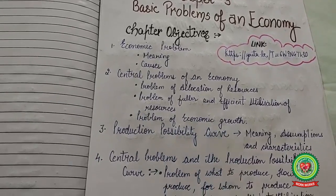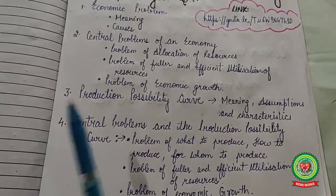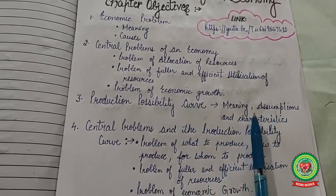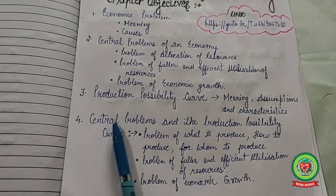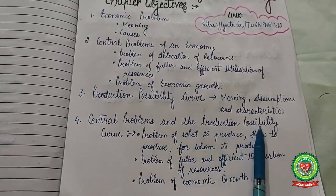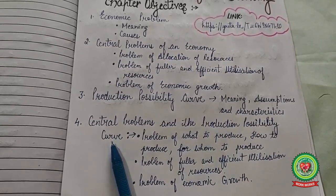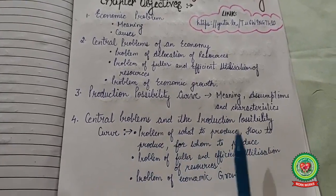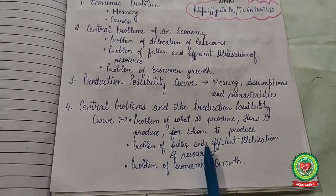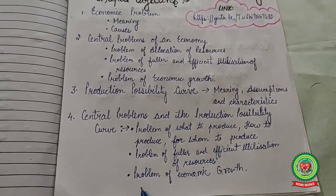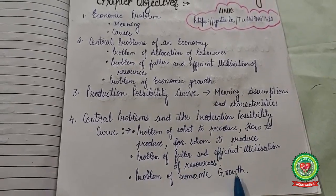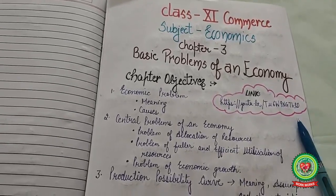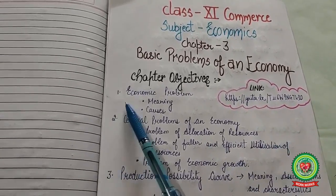Then we will discuss the production possibility curve — its meaning, assumptions, and characteristics. The last topic covers central problems and the production possibility curve, including what to produce, how to produce, for whom to produce, fuller and efficient utilization of resources, and the problem of economic growth in table form.